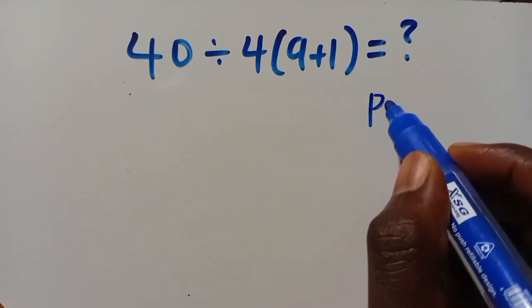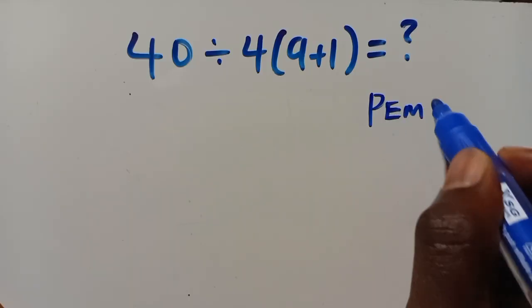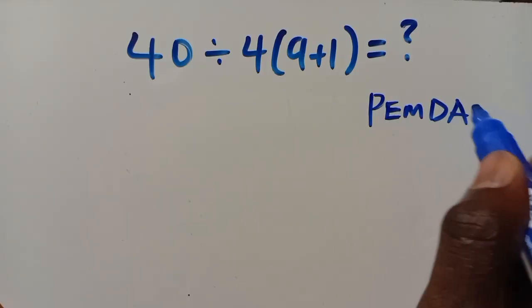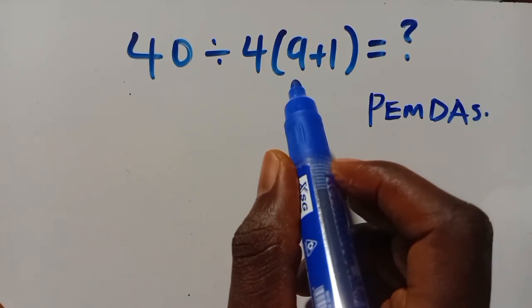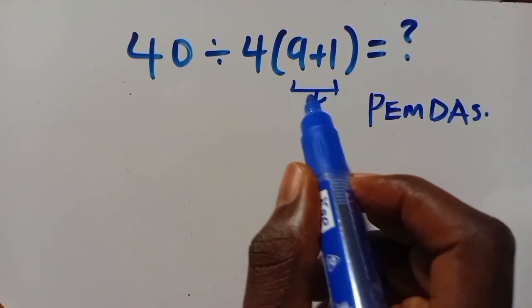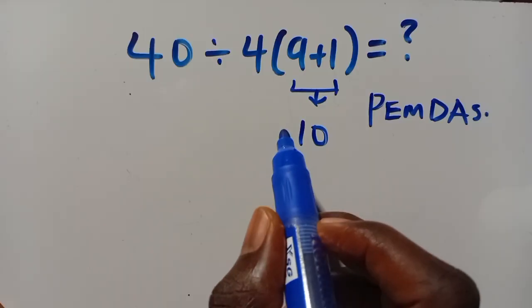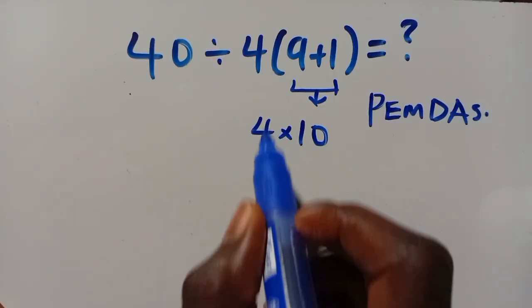follow the order of operations, PEMDAS. We have parentheses first, so we're going to solve 9 plus 1 to get 10, then times 4.